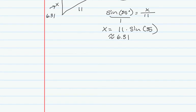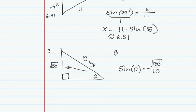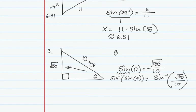A third example uses sine to find an angle measurement. According to angle theta, I have the side opposite and the hypotenuse, so I use sine of theta equals opposite over hypotenuse. To find the angle, I take the sine inverse of both sides. The sine inverse of sine of theta equals the sine inverse of square root of 50 over 10. These are inverse operations, leaving angle theta.